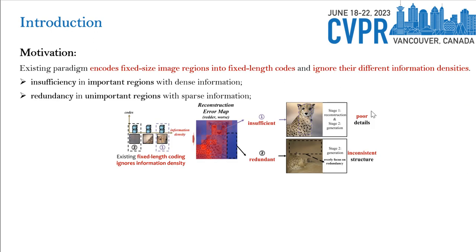However, existing paradigms all encode fixed-size image regions into fixed-length codes and ignore their naturally different information densities. As a result, they suffer from two limitations. First, insufficient coding for important regions, which fails to encode all necessary information for faithful reconstruction and therefore degrades the realism of local details in both stages.